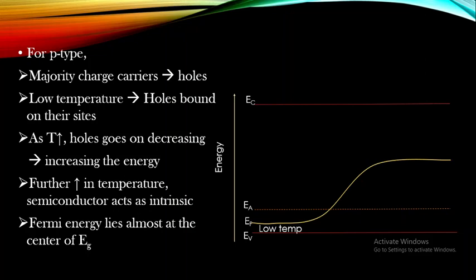For intrinsic semiconductors, the Fermi level lies almost at the center of the energy gap. This is the nature of Fermi energy in p-type semiconductors depending on temperature change.